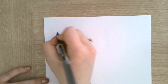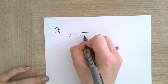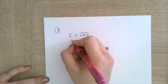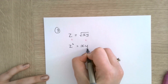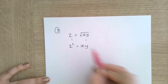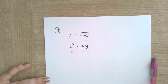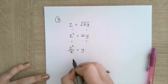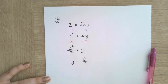Next example: I want to make Y the subject of Z equals the square root of XY. To get rid of the square root, I square both sides: Z squared equals XY. Then to make Y the subject, I divide both sides by X: Y equals Z squared over X. I rewrite it with Y on the left-hand side.